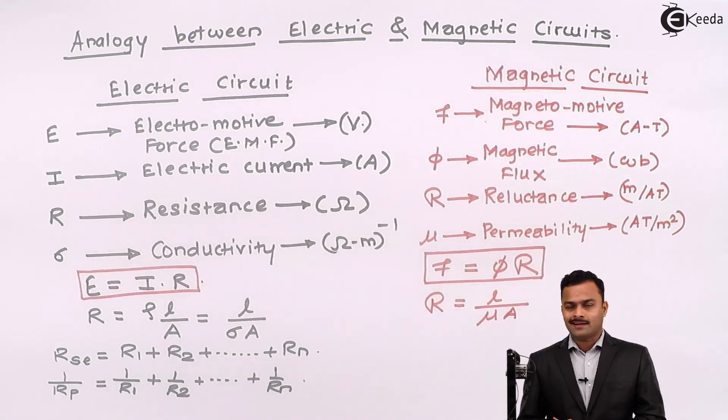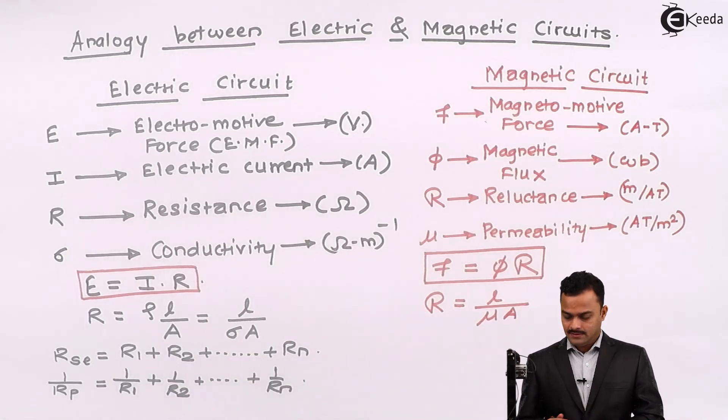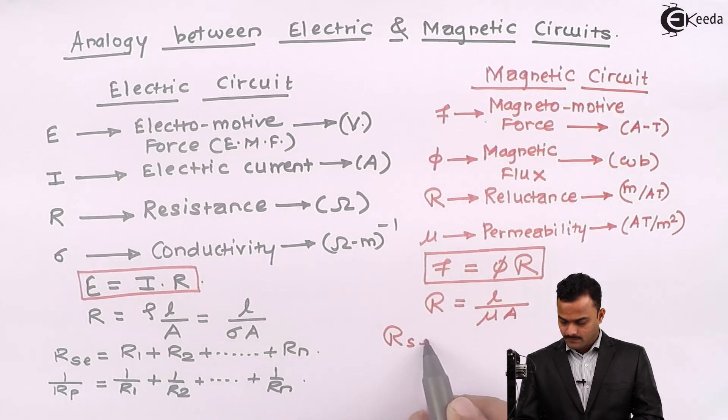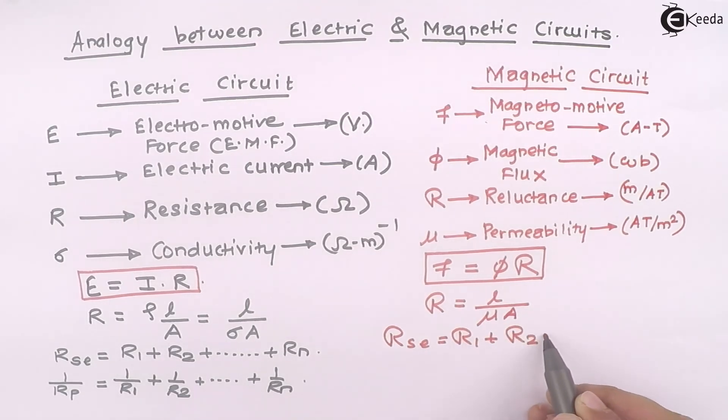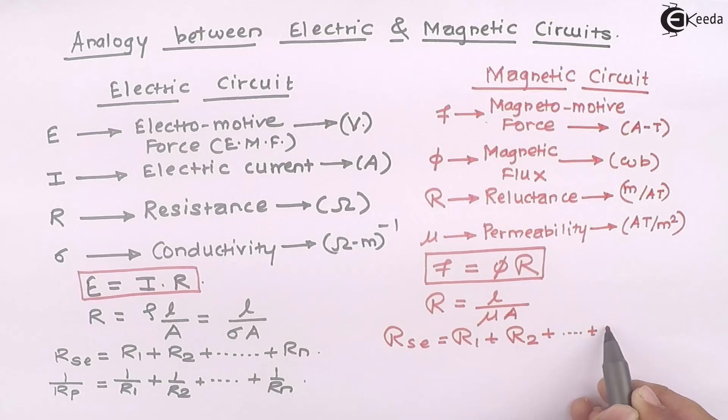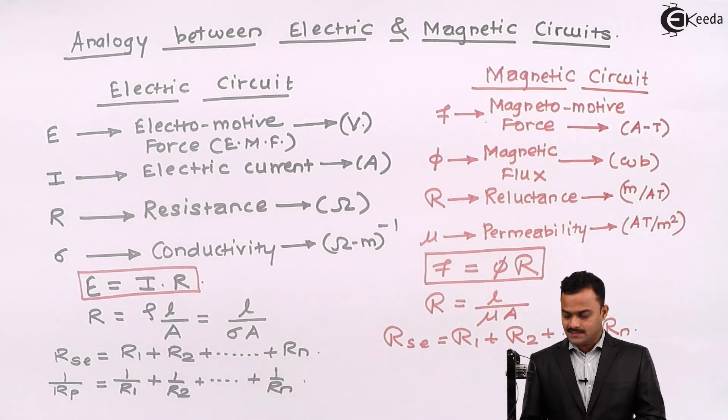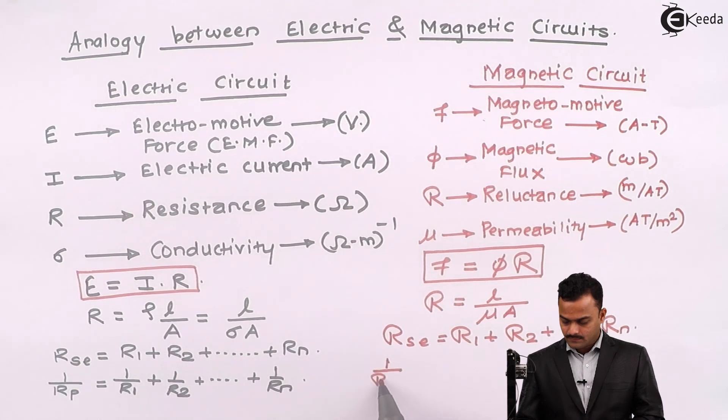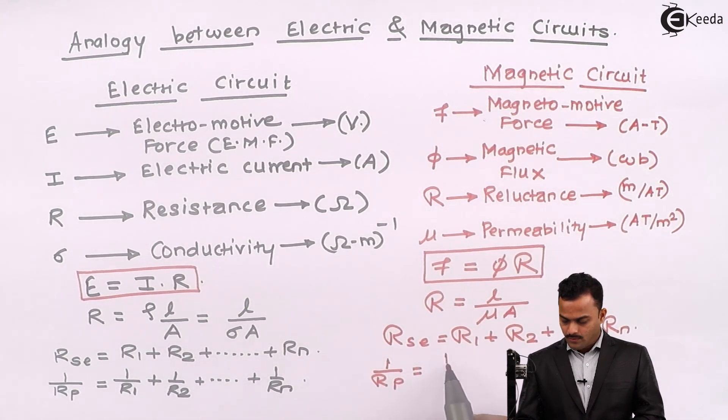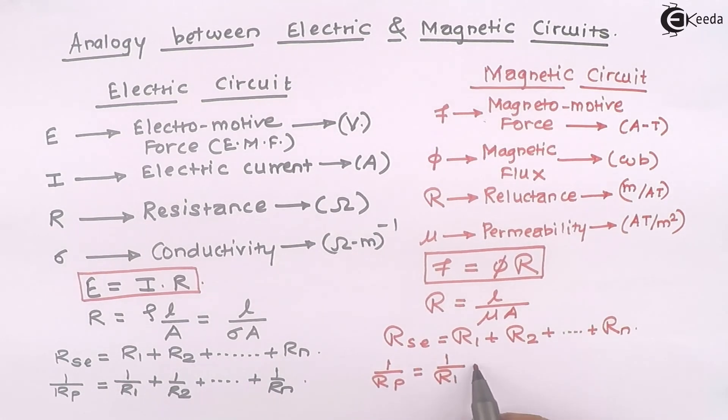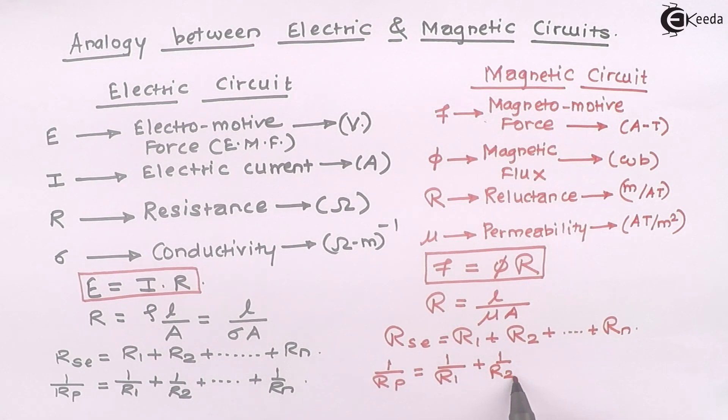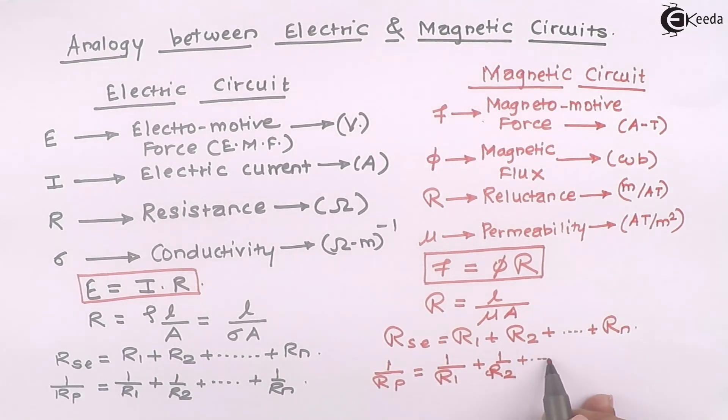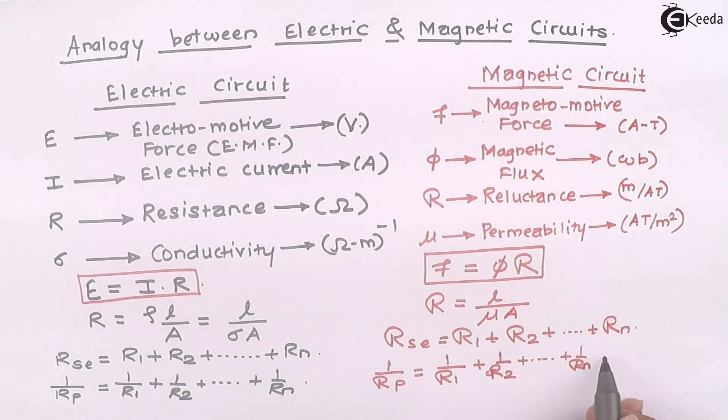If I have reluctance in series, then equivalent of that will be summation of reluctance of all the magnetic circuits in series. Just like resistance in electric circuit, for parallel also same logic applies. 1 upon Rp equal to 1 upon R1 plus 1 upon R2 plus 1 upon Rn.